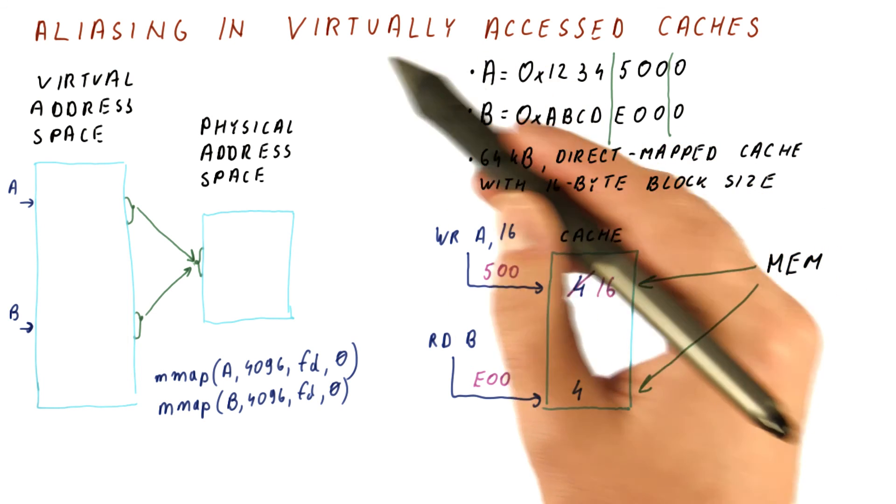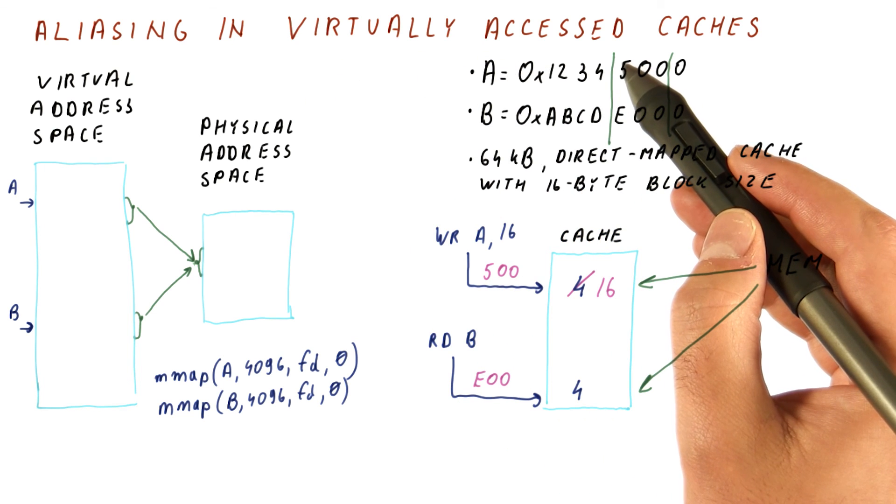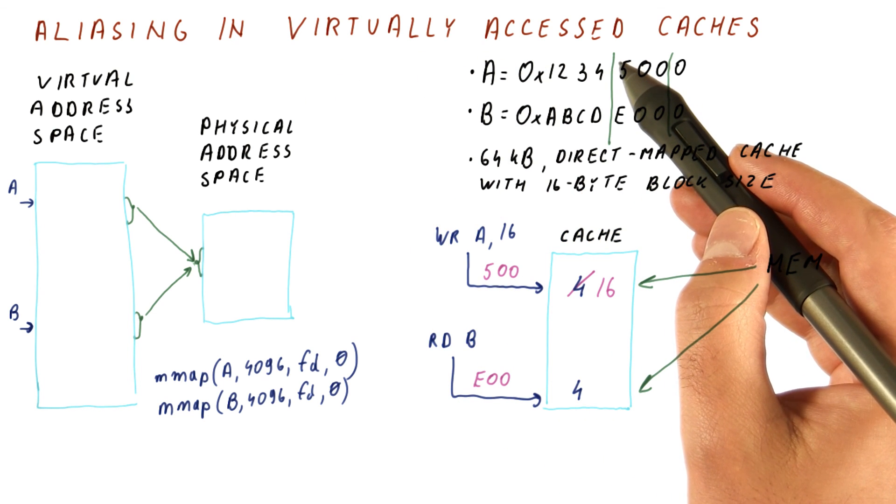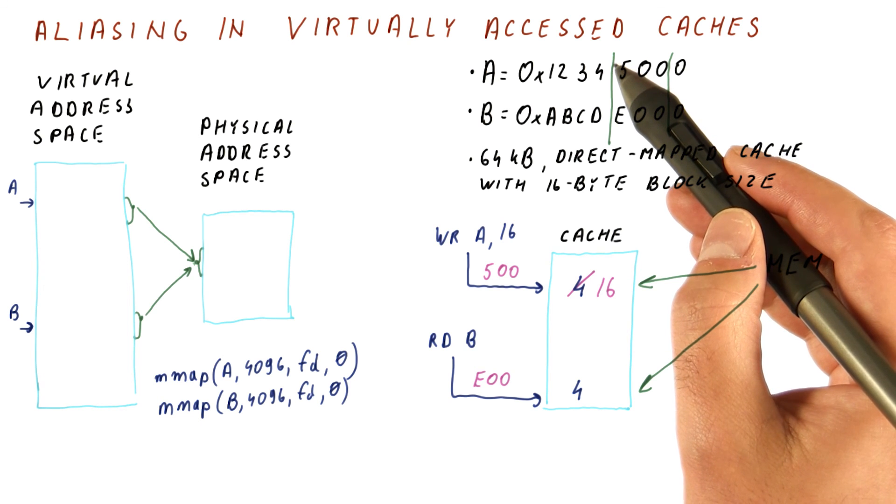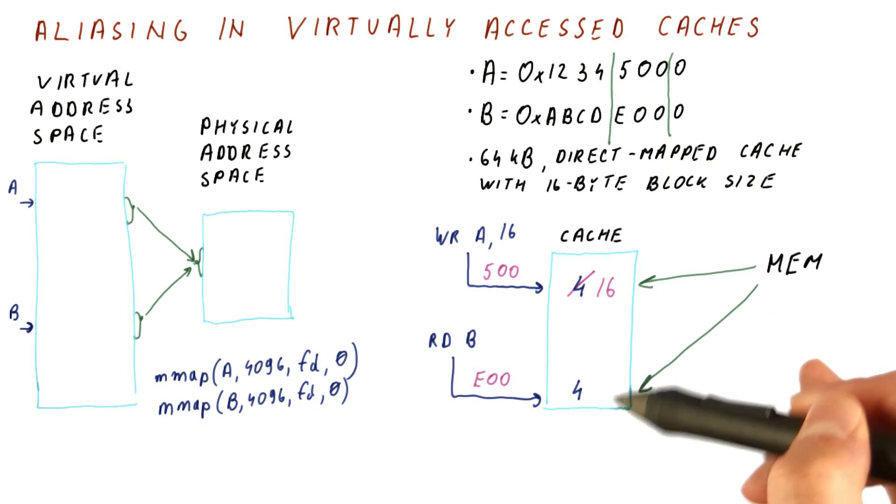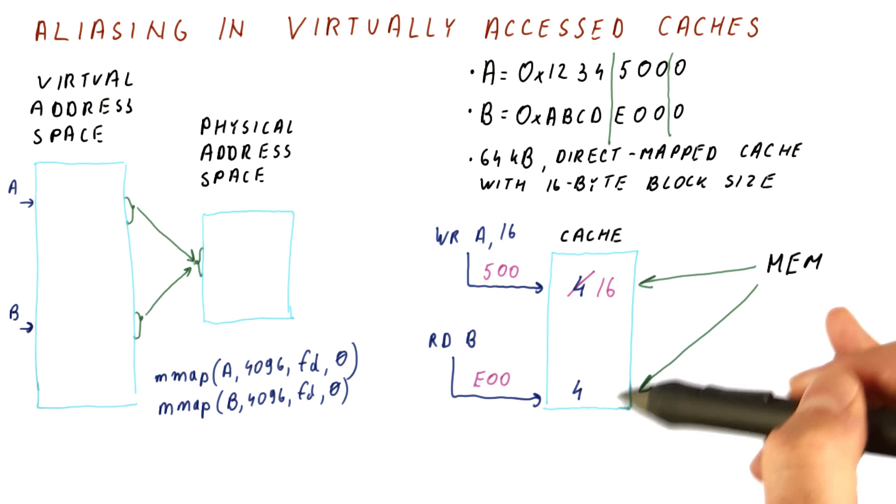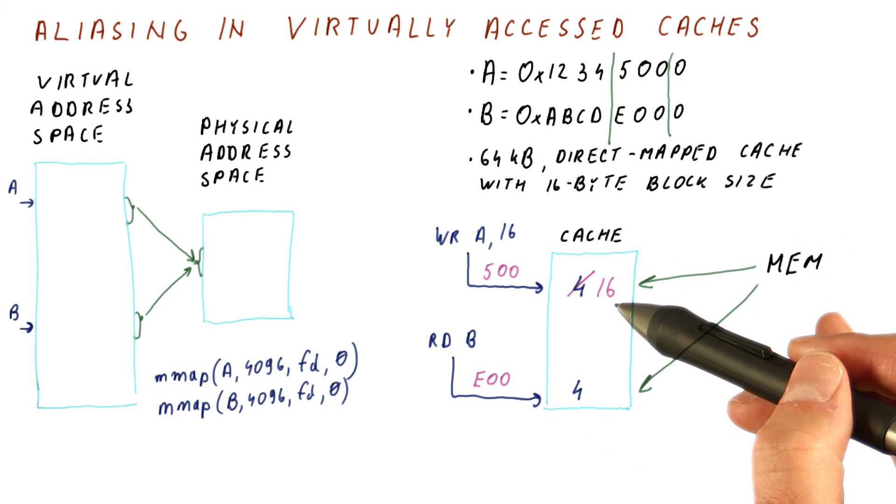To summarize this, we like virtually accessed caches because they allow us to overlap TLB latency with cache latency, but we cannot use them because of the aliasing problem that seriously complicates their implementation.